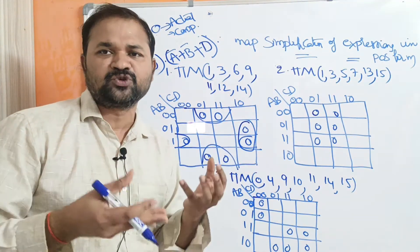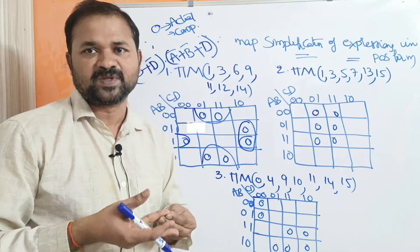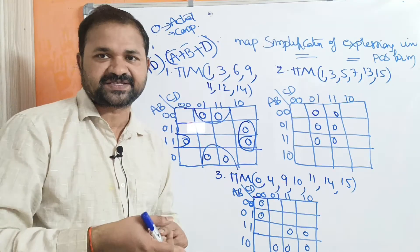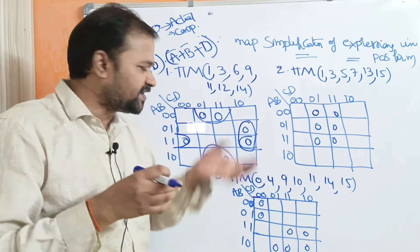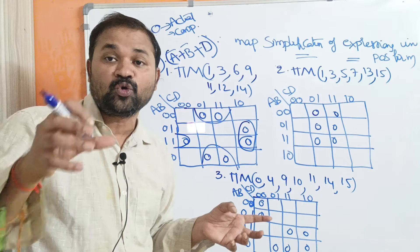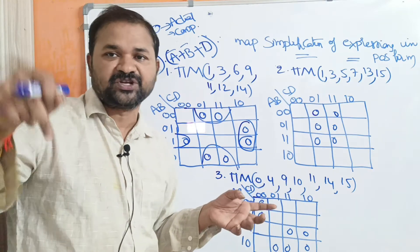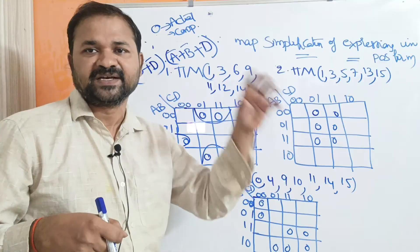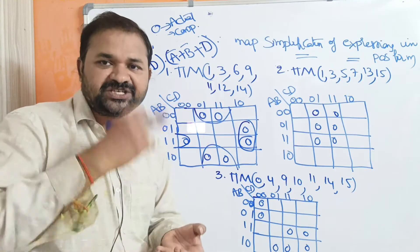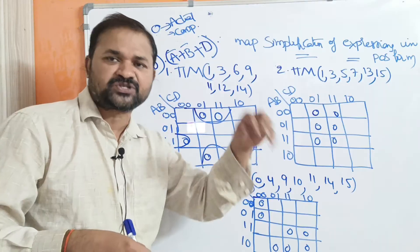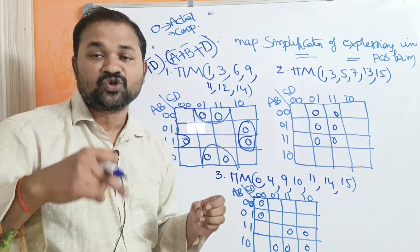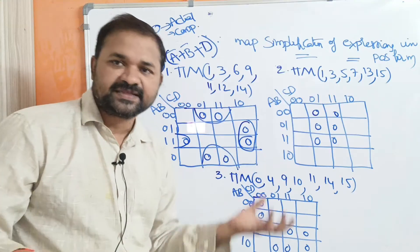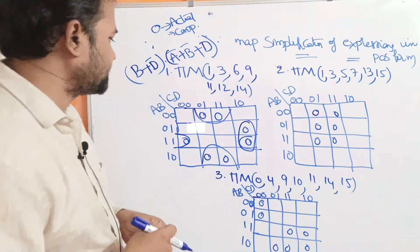We know that groups must be in powers of two: 2⁴ = 16, 2³ = 8, 2² = 4, 2¹ = 2, and so on. So first we search for a group with the most zeros — sixteen zeros. If not available, search for eight zeros, then four zeros, then two zeros.